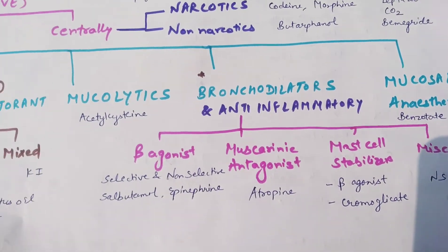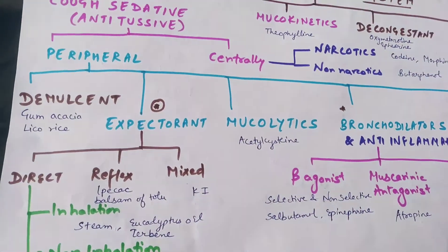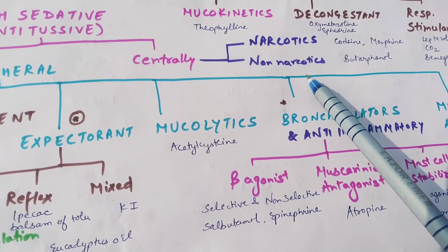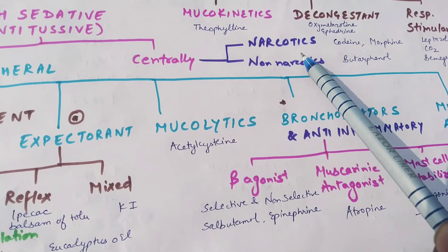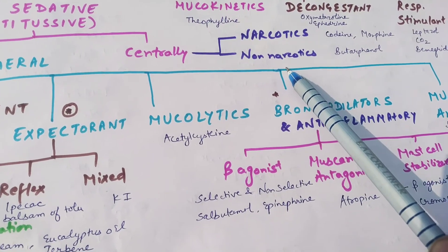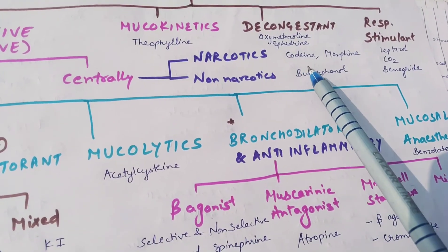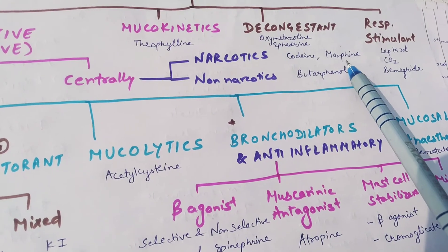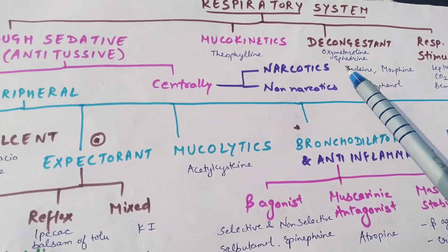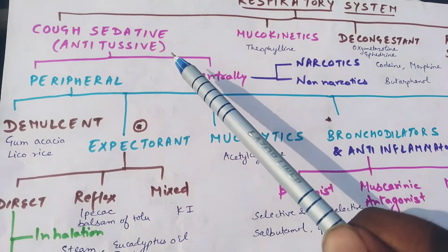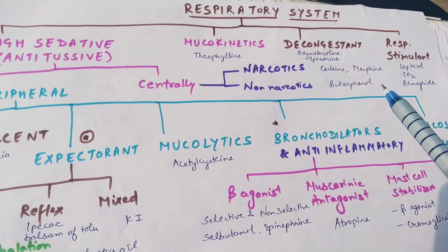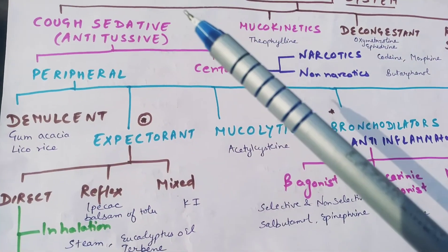If we talk about centrally acting antitussives, they divide into narcotics and non-narcotics. Narcotics cause CNS addiction; non-narcotics do not act on the cortex. Narcotics include codeine and morphine; non-narcotics include butorphanol.